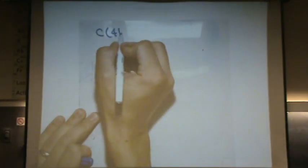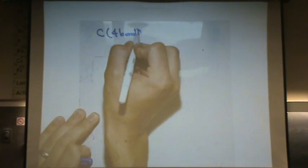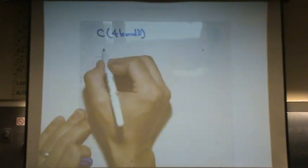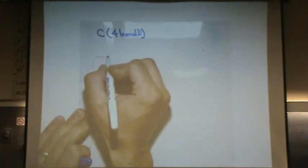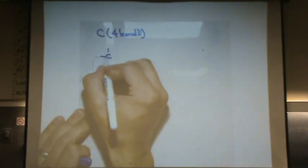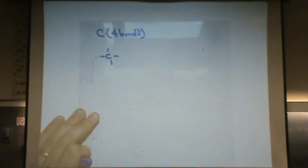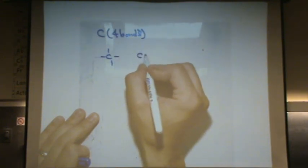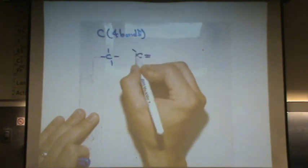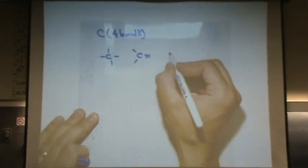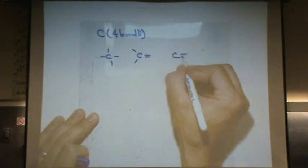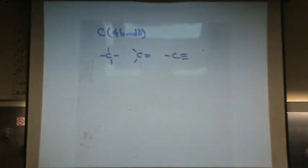You have to remember that every carbon has four bonds always. It could look like a carbon with four things around it, or it could have a double bond and two single bonds, or a triple bond and a single bond. Those are the most common ways that carbon will look.